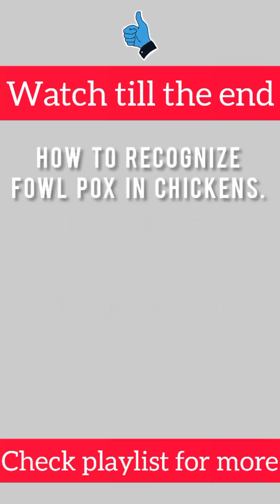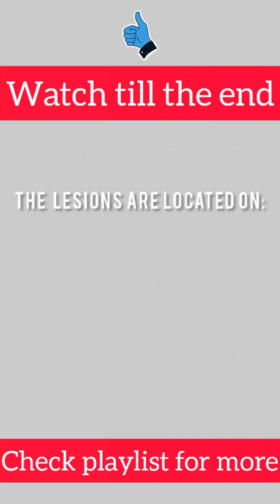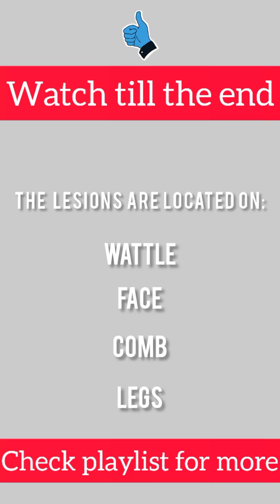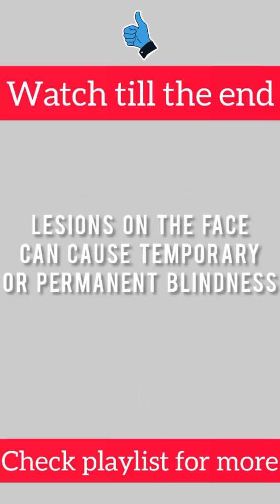How to Recognize Foulpox in Chickens: Round lesions with scabby centers appear on the skin of the birds. The majority of the skin lesions are located on the wattle, face, comb, and legs. Lesions on the face can cause temporary or permanent blindness.